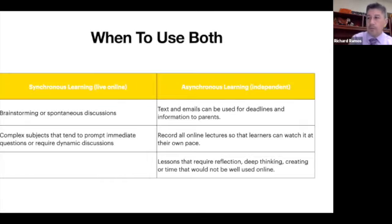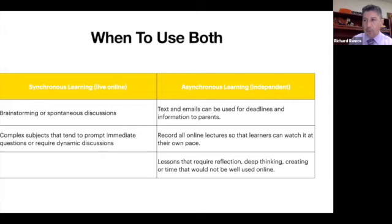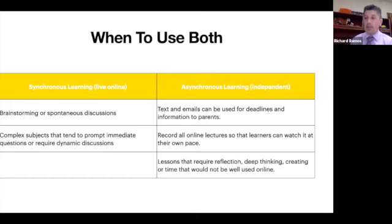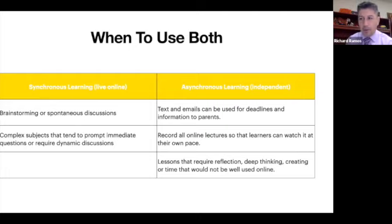This table is provided to give ideas on when to use both types of learning to support student achievement. Synchronous is important to brainstorm ideas and have discussions together. Also, complex content needs cues, prompts, and questions to help students better understand. Asynchronous is critical to use for texting and emailing to communicate deadlines and other important information. Ensuring students have access to recorded online lectures to watch at their own pace is critical. Finally, independent assignments permit time for reflection, critical thinking, and creating projects outside of the online platform.